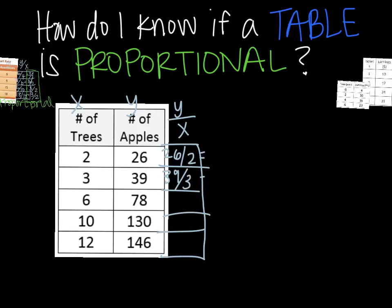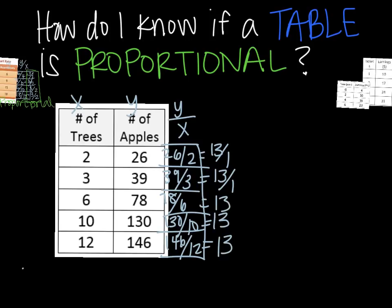39 over 3, simplify. 78 over 6, simplify. 130 over 10, simplify. 146 over 12. And when you simplify all of these, you end up getting 13 over 1, which is just 13. Okay? On all of these. Again, because our y over x, our slope is the same, our answer is proportional.